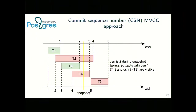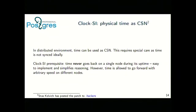The CSN patch has a long discussion history on the hackers list, so we may expect to see it in future releases. With CSN, all we need for distributed transactions is a synchronized counter across all nodes. Using system time as such a counter is not a bad idea, and with some extra work you can do that. This algorithm is called ClockSI — Clock Snapshot Isolation — and it provides snapshot isolation semantics over distributed systems.